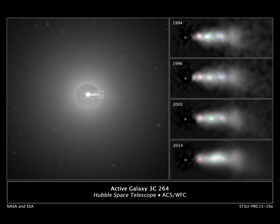An astrophysical jet is an astronomical phenomenon where outflows of ionized matter are emitted as an extended beam along the axis of rotation. When this greatly accelerated matter in the beam approaches the speed of light, astrophysical jets become relativistic jets as they show effects from special relativity.